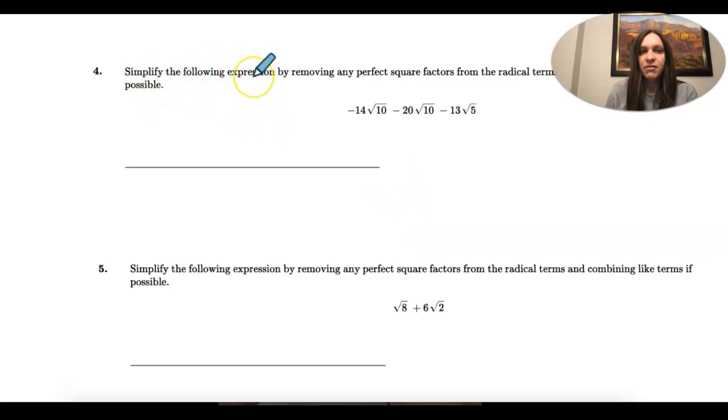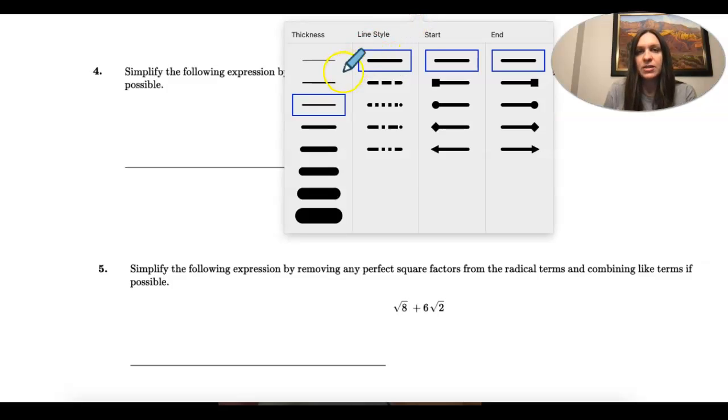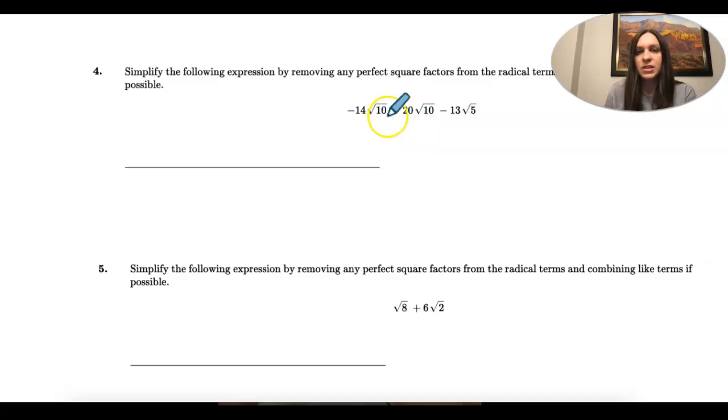Number four, simplify the following expression by removing any perfect square factors from the radical terms and combining like terms if possible. So first thing we're going to see if we can simplify these radicals because we have some different ones. So this is where we're going back to what we did in 1.1.